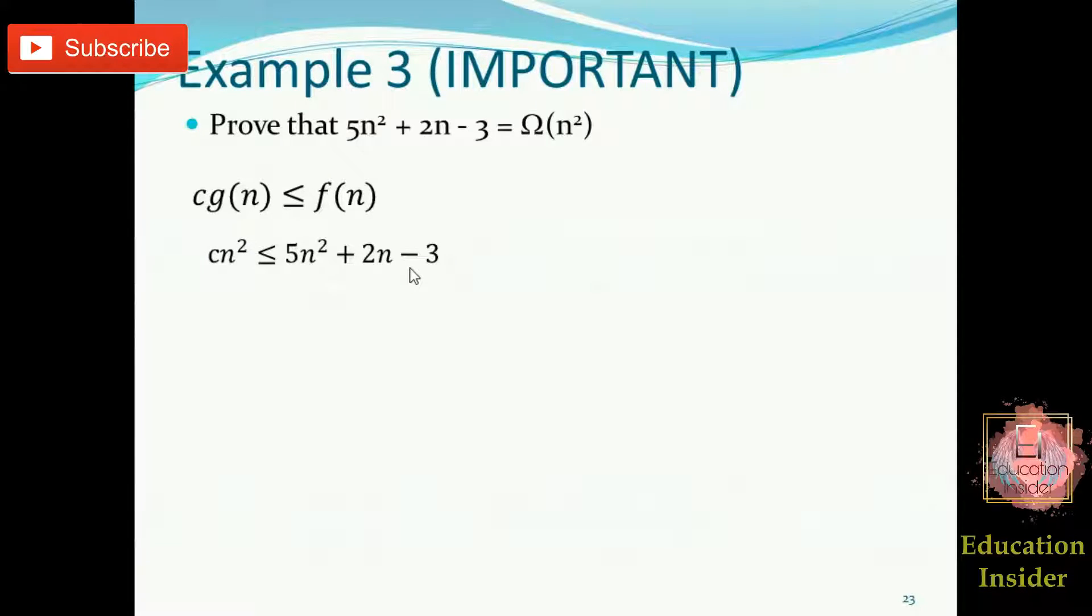So we need to prove that this is greater than this. If we observe the right side, something positive is adding to this but meanwhile something negative is subtracting. So we must prove that this whole is positive. For proving this we assume this inequality like this, that is 2n minus 3 is greater than 0.